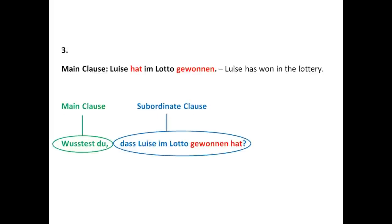'Luise hat im Lotto gewonnen' — 'Luise has won in the lottery.' We're using the perfect tense here, with the helping verb 'hat' and the past participle 'gewonnen'. The helping verb is in the second position and the past participle is in the last position in the main clause. In a subordinate clause, we put both verbs at the end: the past participle in the second-to-last position, and the helping verb in the last position. So: 'Wusstest du, dass Luise im Lotto gewonnen hat?' — literally, 'did you know that Luise in the lottery won has?'